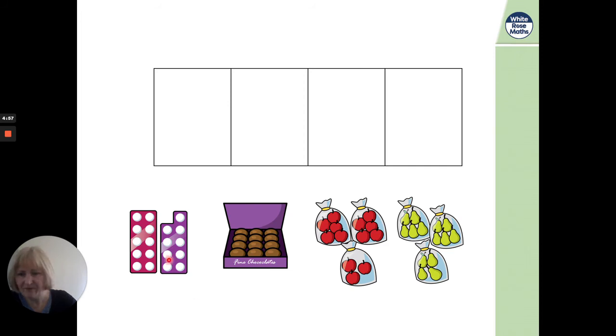Ooh, what can we see here? We've got some Numicon shapes, a 10 and a 9, 19. Well done. A box of chocolates. How many chocolates? 1, 2, 3, 4, 5, 6, 7, 8, 9, 10, 11, 12. Some bags of apples. 5 and 5. 5 add 5 is 10. And 3 more is 10. 10 add 3, 13. And pears. 5 add 5. That's the 10 and 4. 10 and 4, 14. Okay.